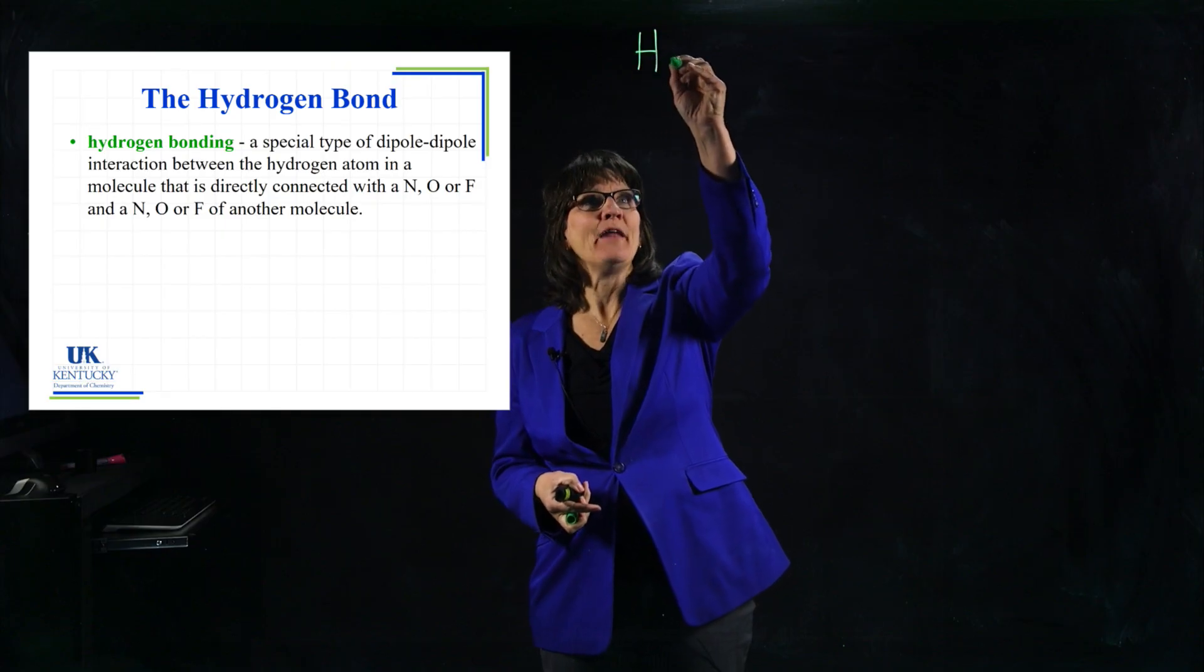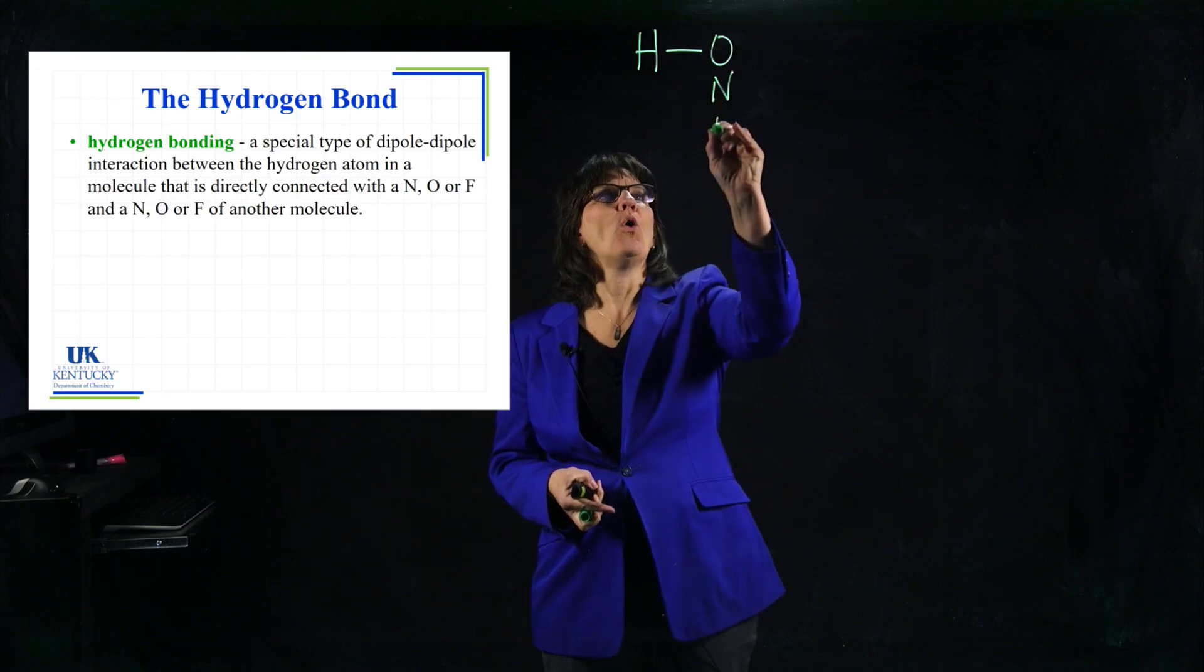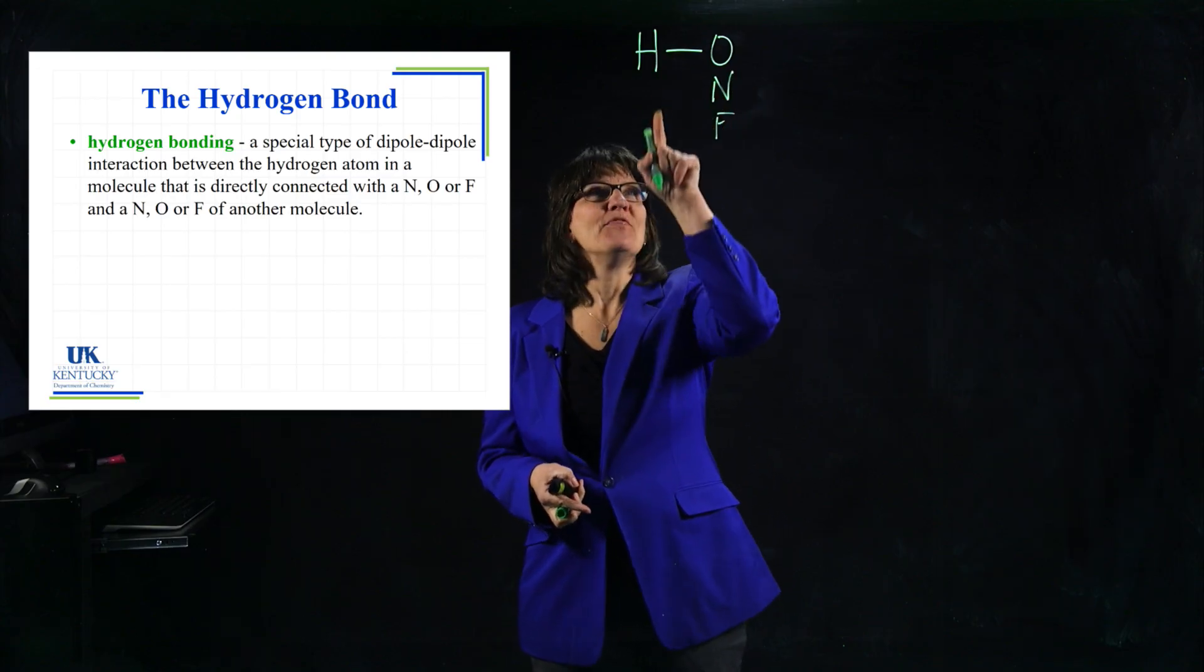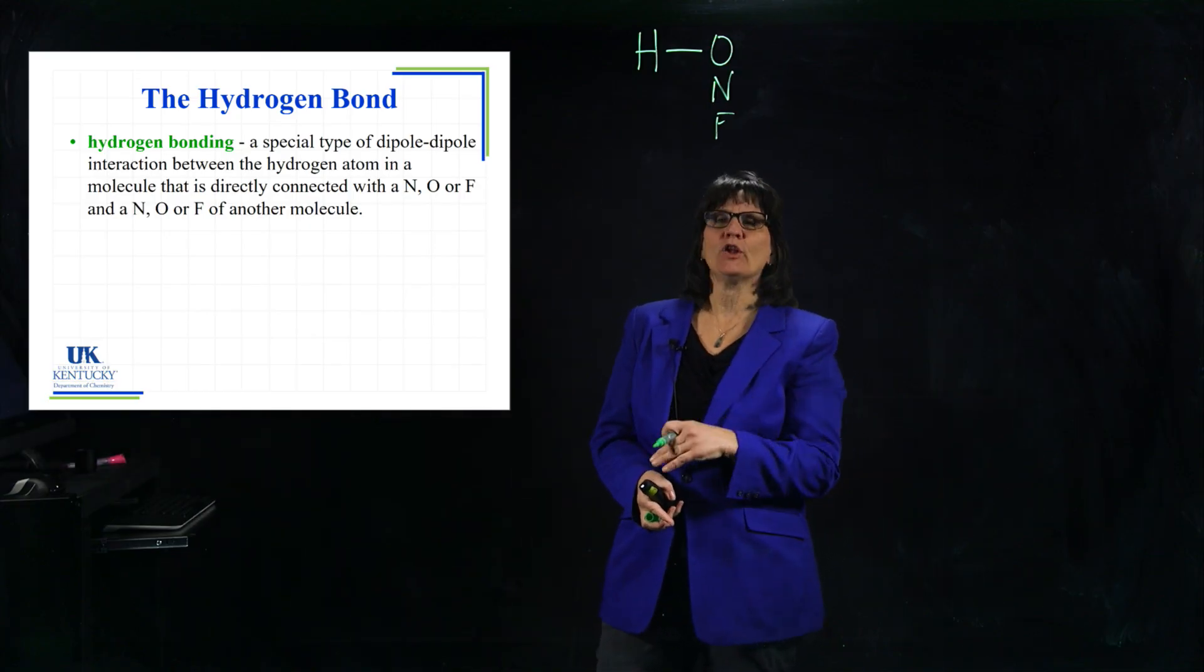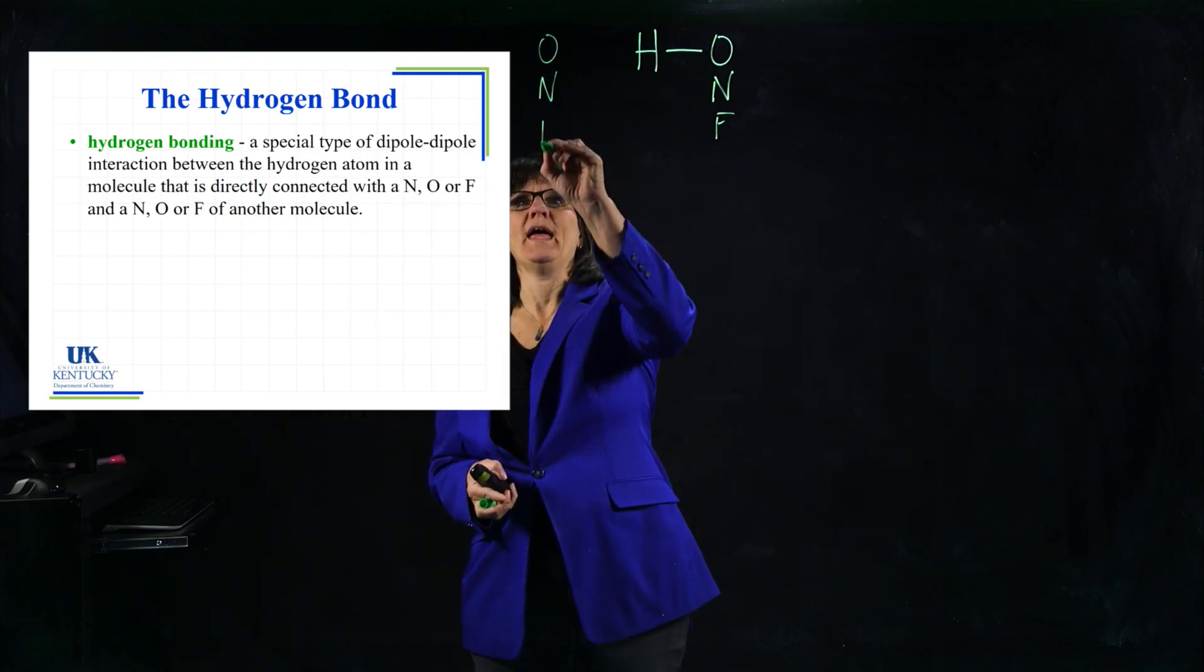So we have a hydrogen that has a covalent bond to an O or an N or an F. So that's a covalent bond. That is not the hydrogen bond. That's the first criteria of it.